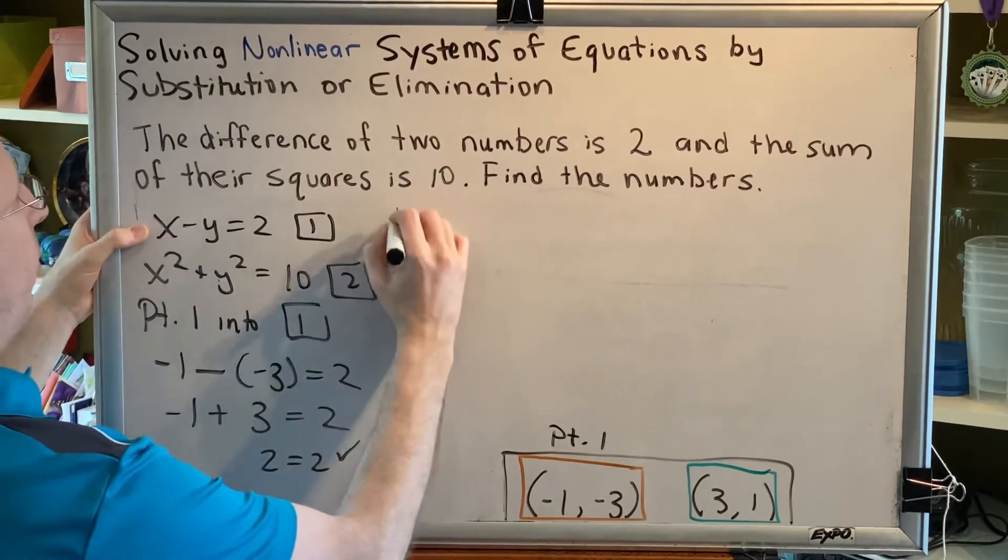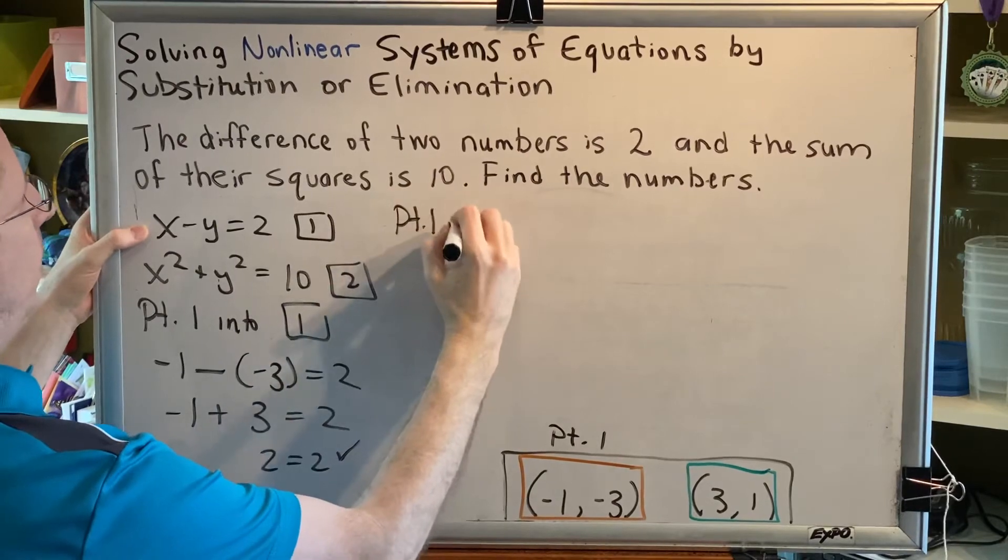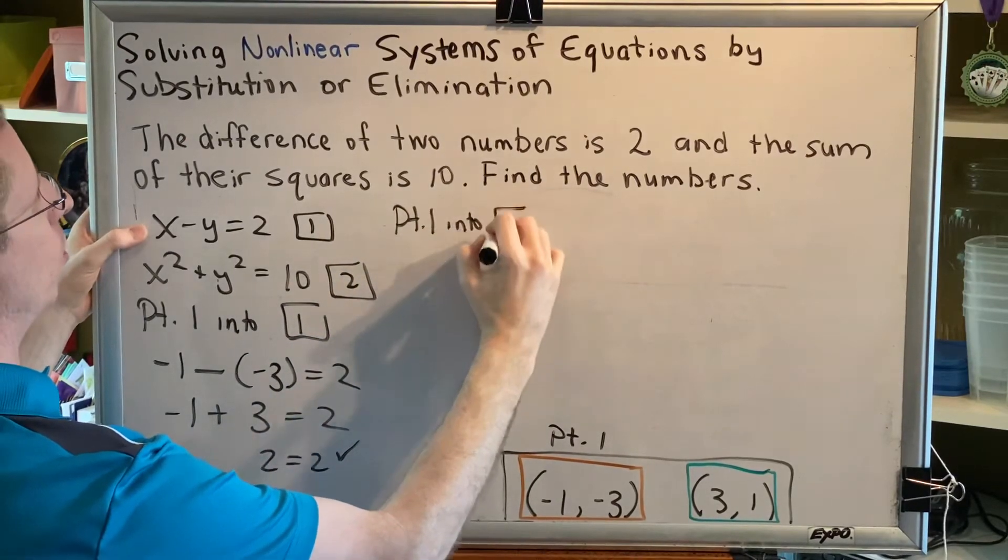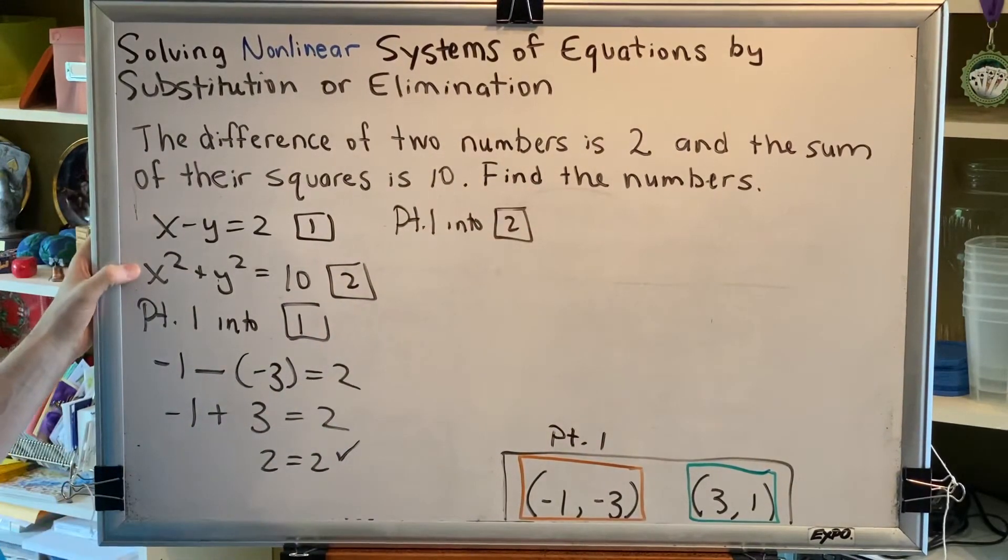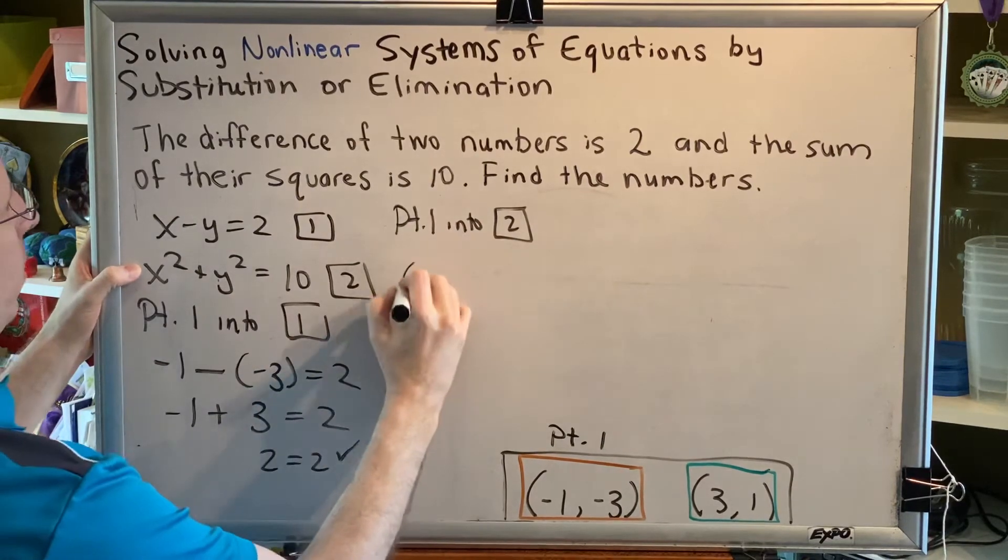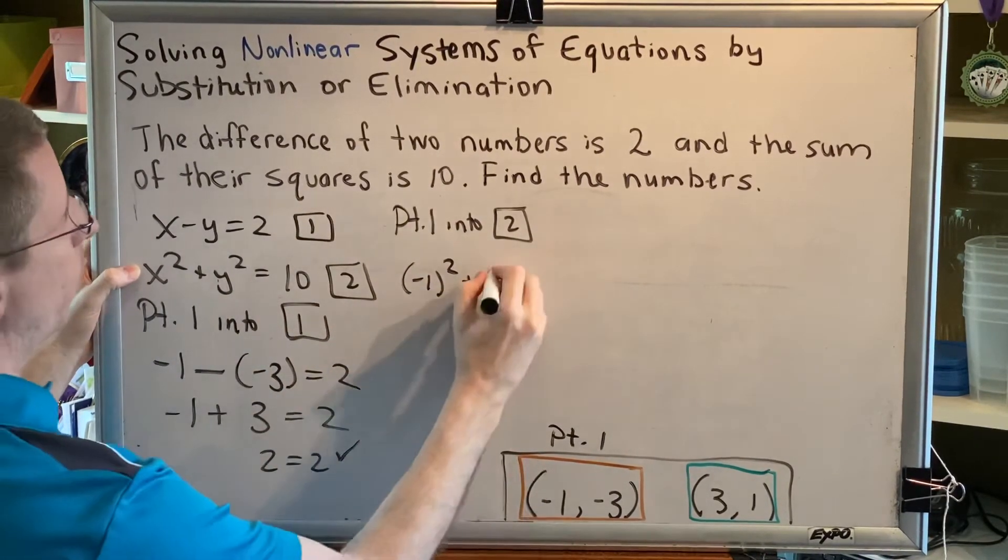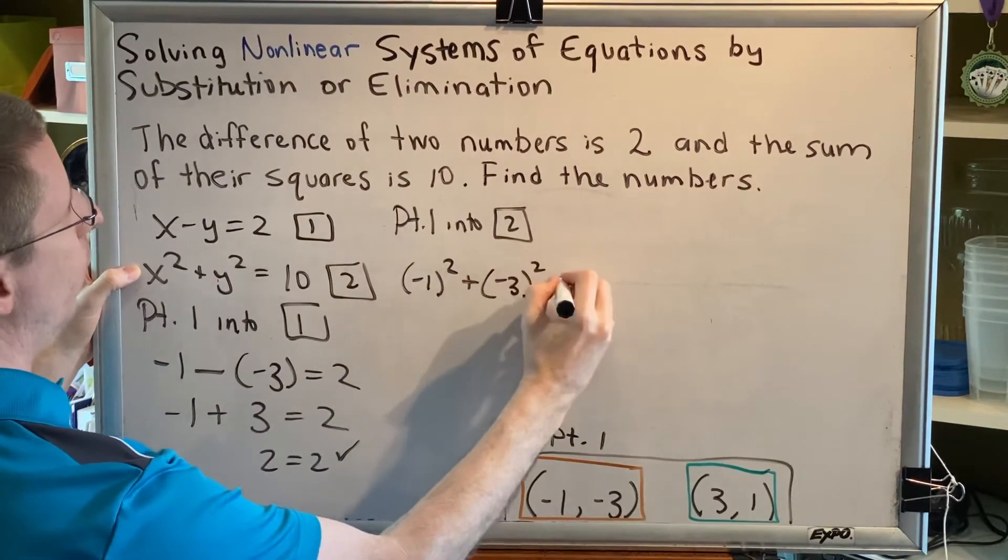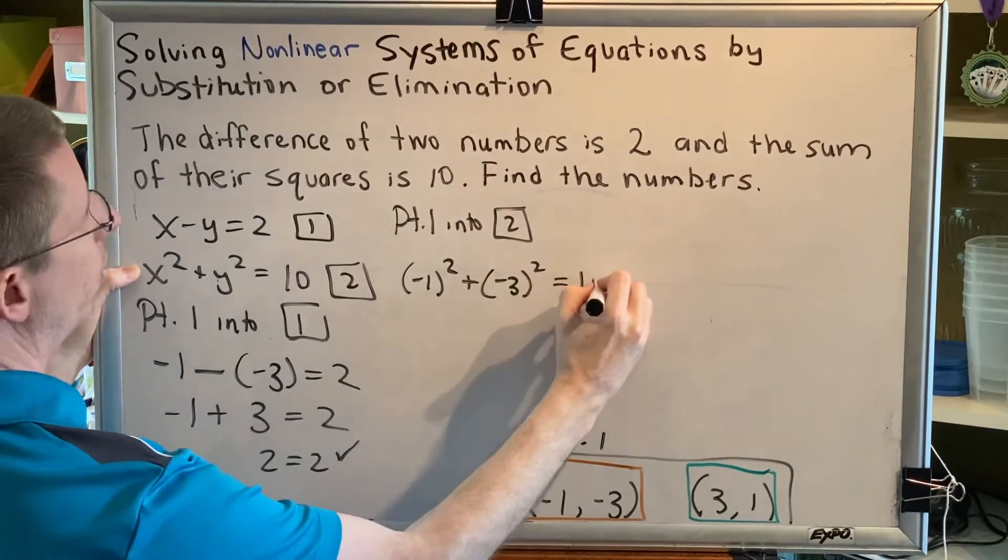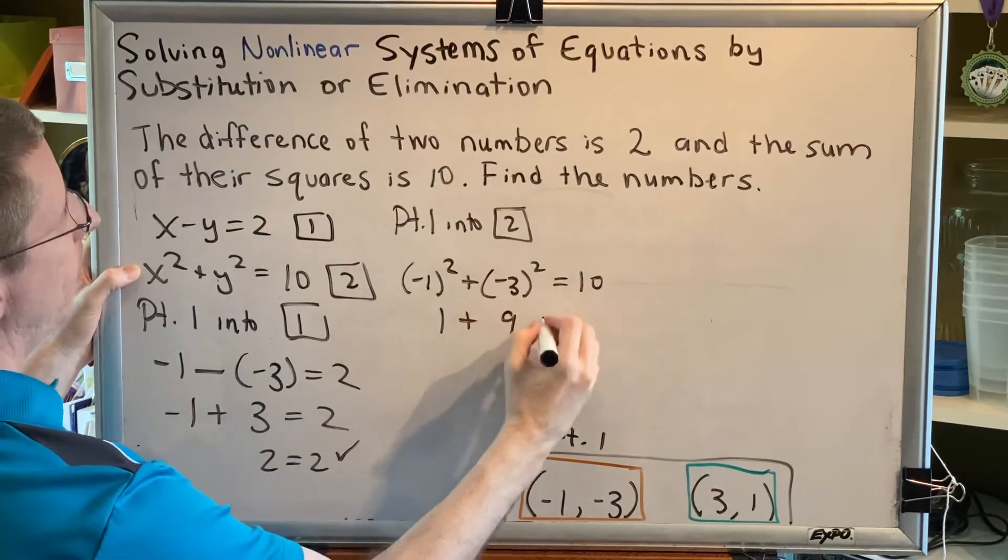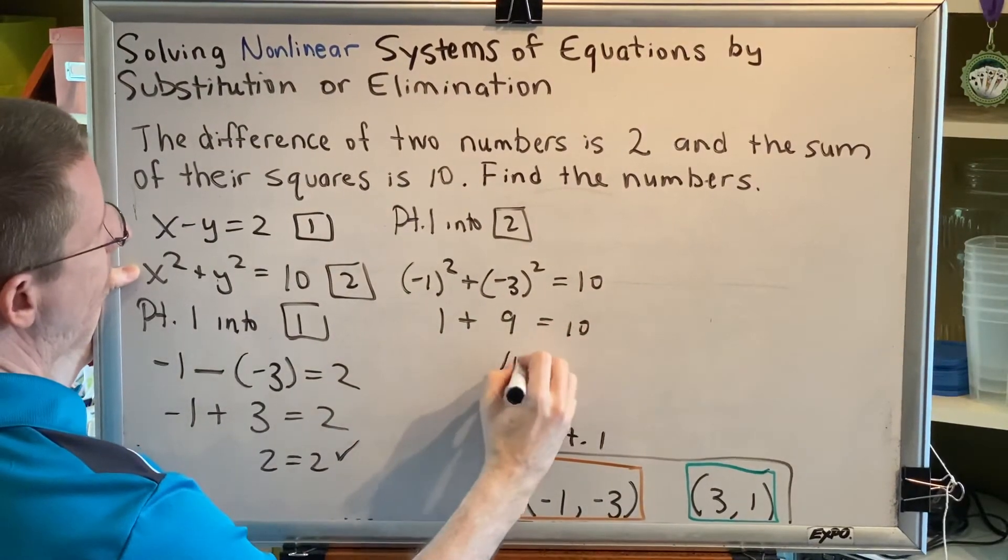Now we can try plugging point 1 into equation 2. So everywhere we see x, we put negative 1. So it would be negative 1 squared plus negative 3 squared equals 1 plus 9 equals 10. 10 equals 10.